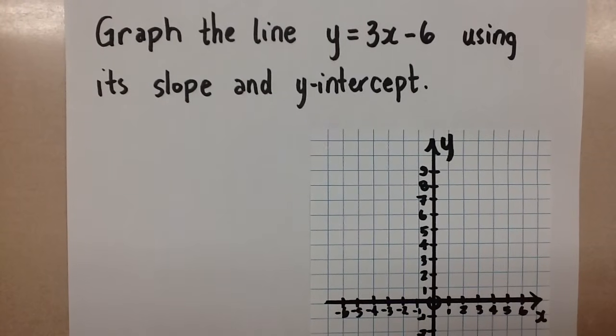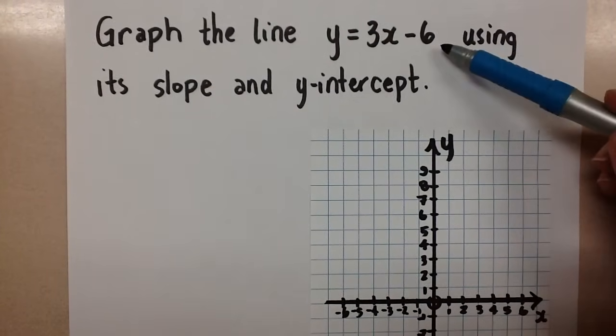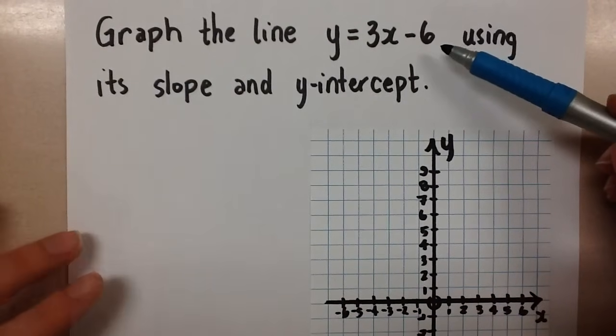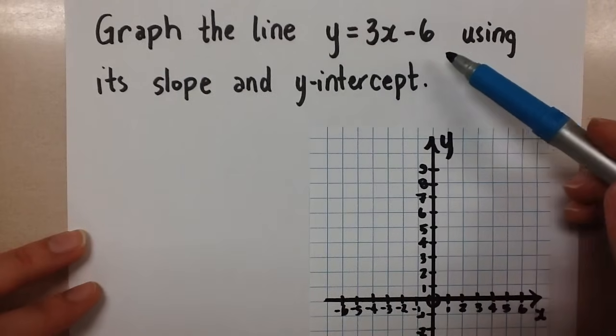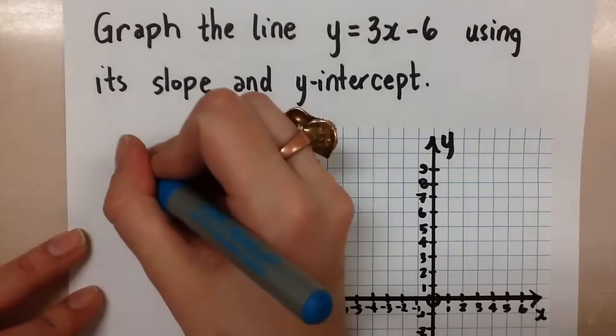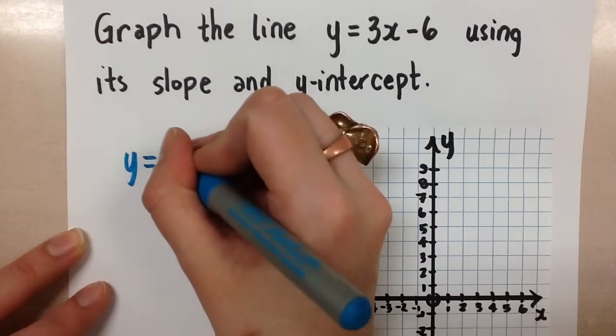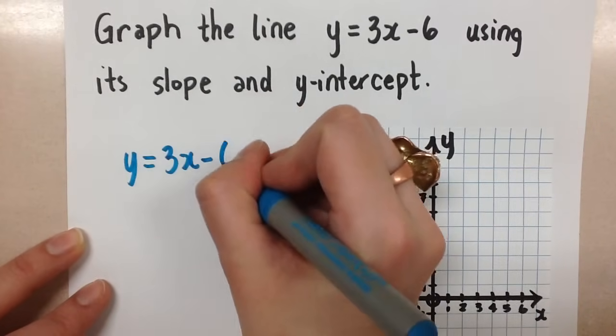Hi guys, Mrs. A here. We are looking at graphing lines given with the equation in slope y-intercept form. So here we want to graph this line y = 3x - 6.